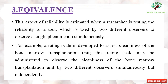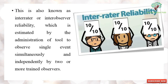The third aspect is equivalence. This aspect of reliability is estimated when a researcher is testing the reliability of a tool which is used by two different observers to observe a single phenomenon simultaneously. For example, a rating scale developed to assess the cleanliness of a bone marrow transplantation unit may be administered by two different observers simultaneously but independently. This is also known as inter-rater or inter-observer reliability, estimated by the administration of the tool to observe a single event simultaneously and independently by two or more trained observers.